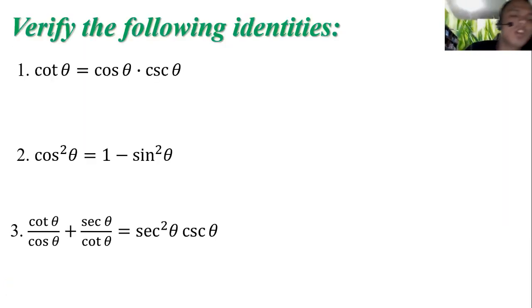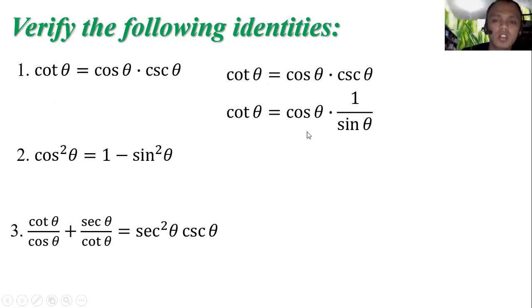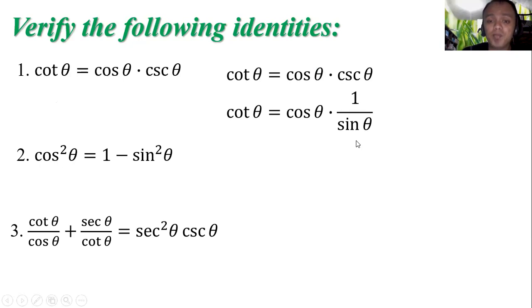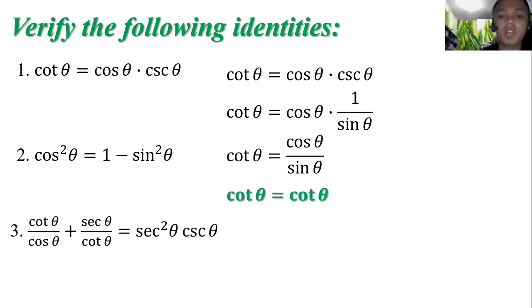Now let us have an exercise. Verify the following identities. For number 1, cotangent theta is equal to cosine theta times cosecant theta. To prove this, change cosecant theta to 1 over sine theta, then multiply cosine theta times 1 over sine theta to get cosine theta over sine theta, which equals cotangent theta — confirmed by the fundamental identities.